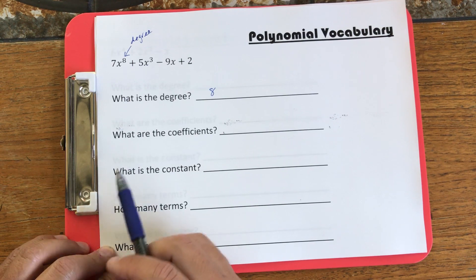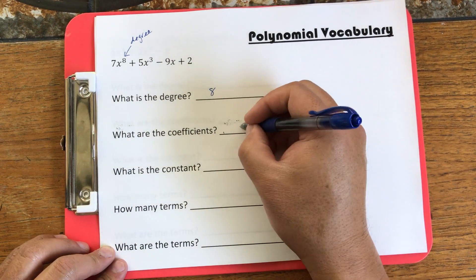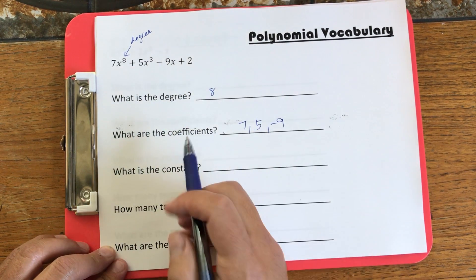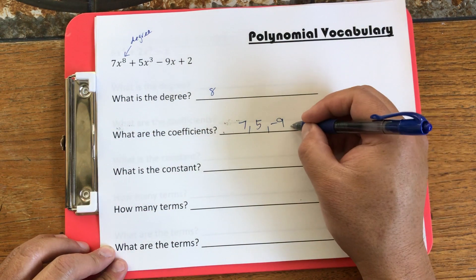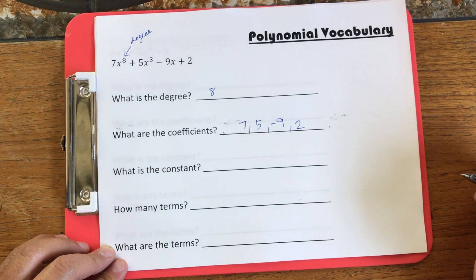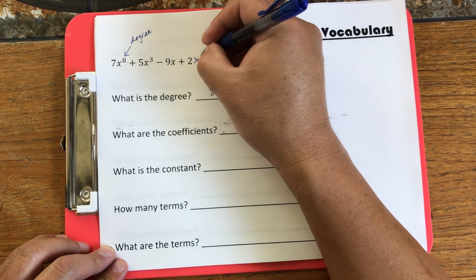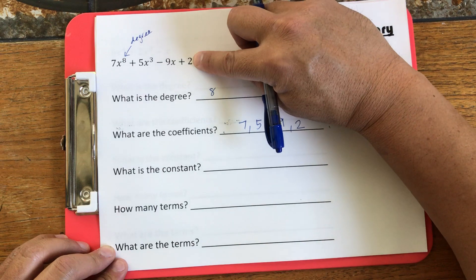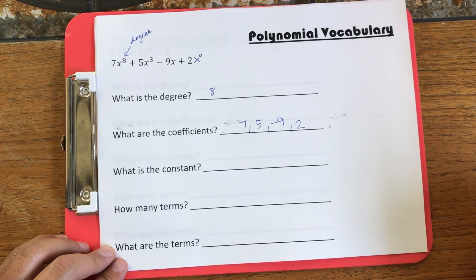The coefficients are the numbers that are in front of the variable. So in this case, it's 7, 5, negative 9. Don't forget to keep the sign and also 2. Now you may be saying there's no variable for 2. Actually, there is. It's just hidden. x to the 0 is 1. So this simplifies to 2. So that constant, that last number is also a coefficient.